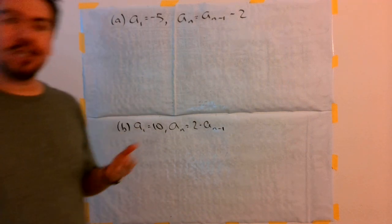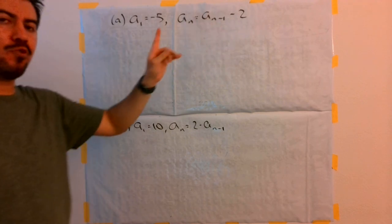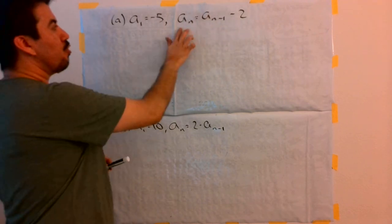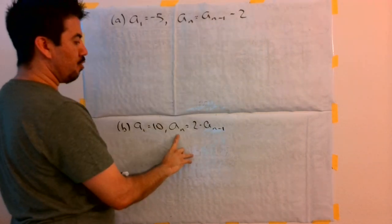In this video, I want to show you how to translate from a recursive rule that's given to us. Remember, a recursive rule means the relationship between a term and its previous term, whether it's by a common difference or a common ratio term to its previous term.